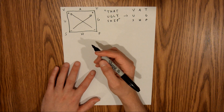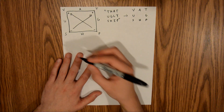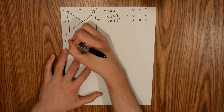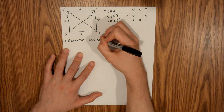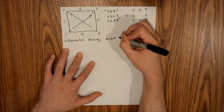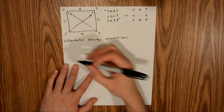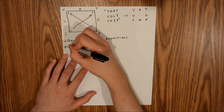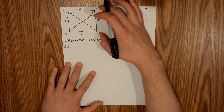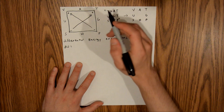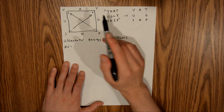Two of the main things you can extract from the thermodynamic square are the differential energy expressions and the Maxwell relations. I'm going to start with the differential energy expressions, beginning with the internal energy. We're going to have dU equal to something. When you do the differential energy expressions, you start with the non-natural variables and take the same sign with that variable where you start. Since this is internal energy, T and P are your non-natural variables.